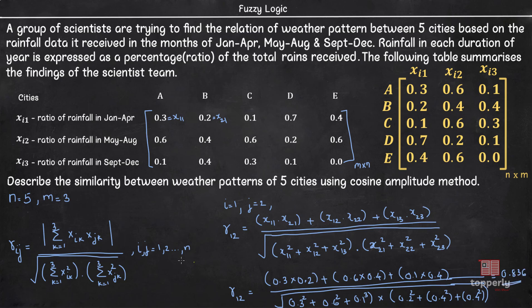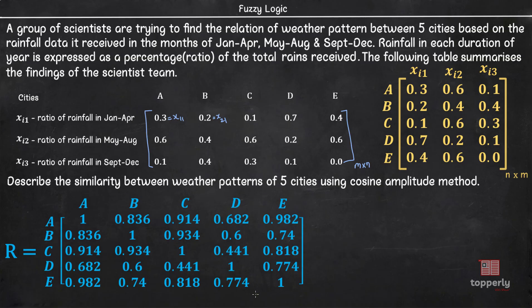Similarly, if you calculate all other values of Rij, you will get an n into n matrix R like this. Now, using this relation or similarity matrix, you can see that city C is more similar to city B than city A as 0.934 is a greater value than 0.914. Similarly, city E is more similar to city C than city D in weather patterns.